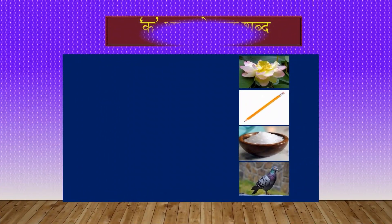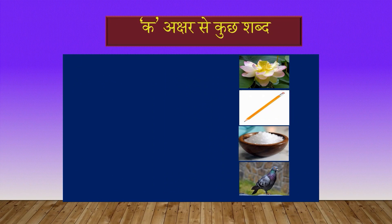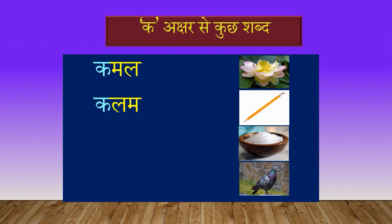चलिए, क अक्षर से कुछ शब्द देखते हैं: कमल, कलम, नमक, कबूतर।